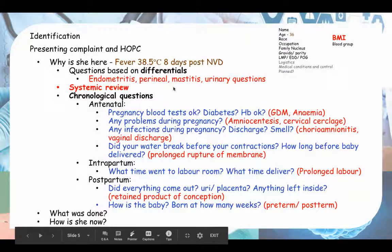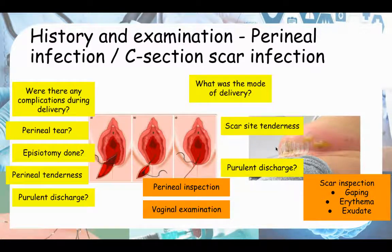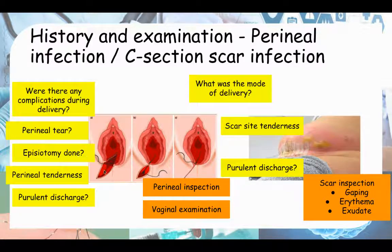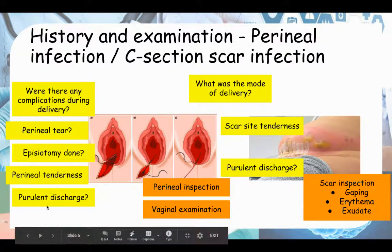For perineal questions, ask what was the mode of delivery. If it was a C-section, the scar is a potential site of infection - ask whether there is pain or discharge around the scar. If it was vaginal delivery, ask whether there was a spontaneous perineal tear, episiotomy, or instrumental delivery. Forceps delivery has a higher risk of high vaginal tear and cervical tear. Ask about perineal tenderness and any discharge from below.